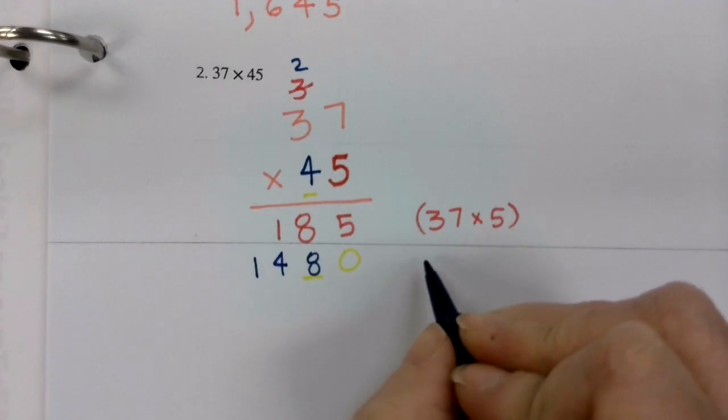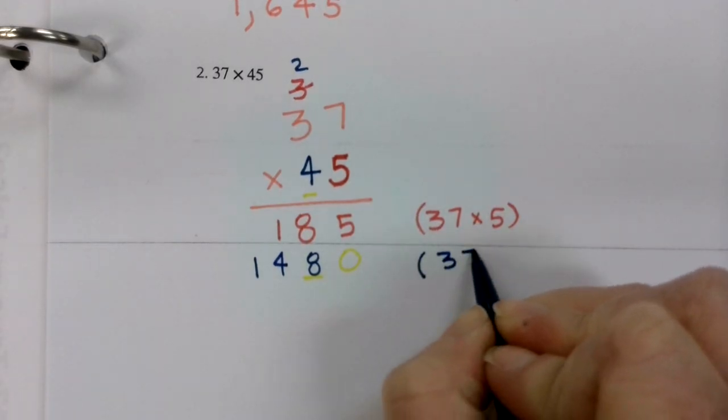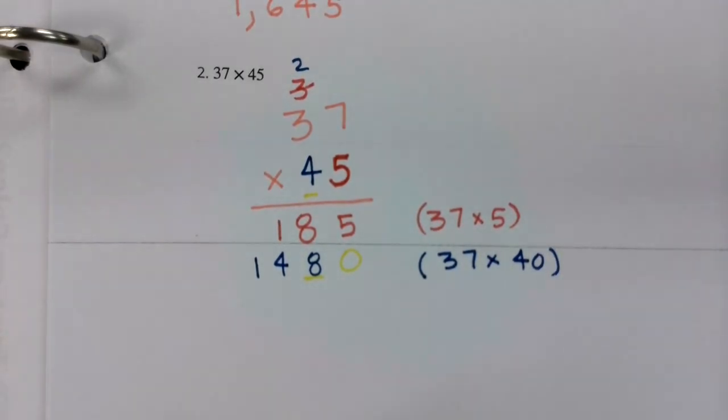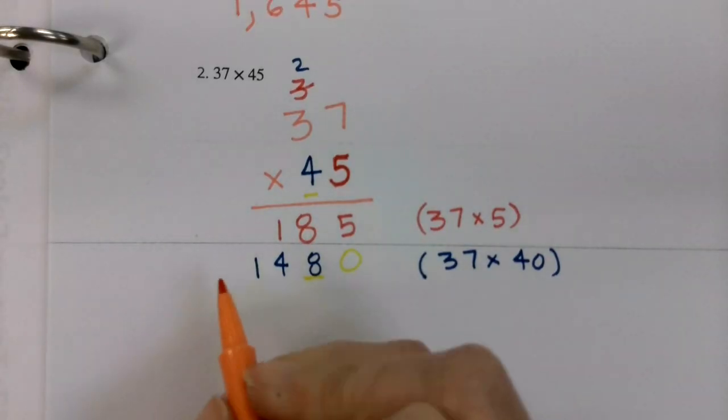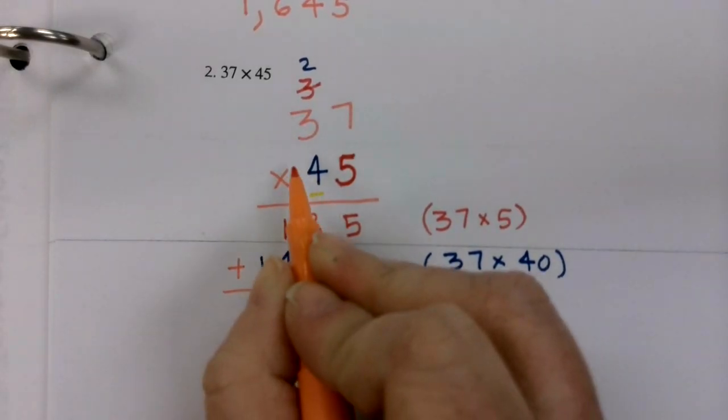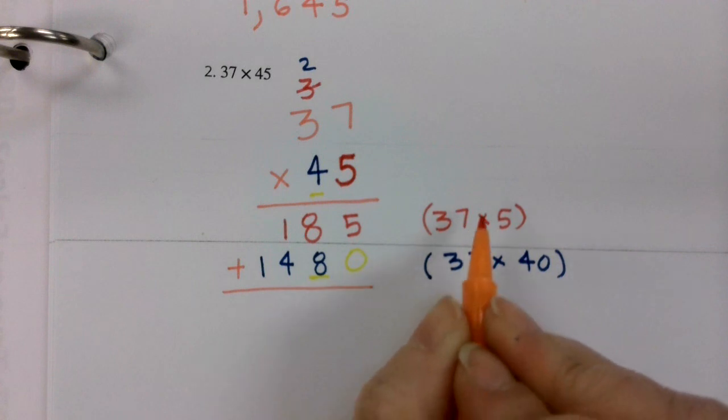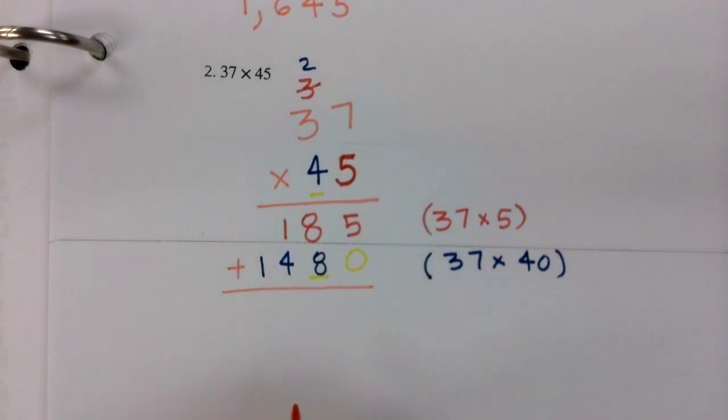And now we have our partial product to what? 37 times 40 equals. Now, boys and girls, we've had two numbers that we have multiplied by two partial products. And now we're ready to add.